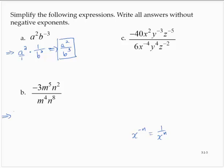For exercise b, negative 3 m to the fifth n to the second over m to the fourth n to the eighth. I'm going to simplify this like I did before. I would have a negative 3 over 1, so just negative 3 times. I'd have an m to the 5 minus 4, and I'd have an n to the 2 minus 8, subtracting the exponents since I'm dividing numbers with the same base. So that would give me negative 3 m to the first power and n to the negative sixth.